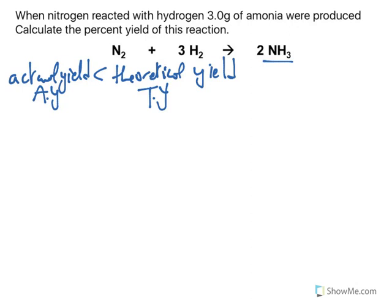Now looking at this question, it says that the amount of NH3 obtained was 3 grams. Calculate the percent yield. In order to calculate the percent yield, first we need to find the theoretical yield, because we don't have it but we only have the actual yield which is 3 grams.